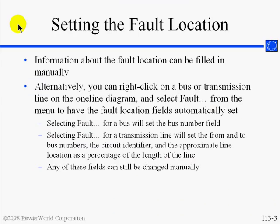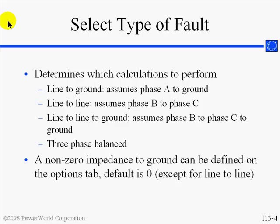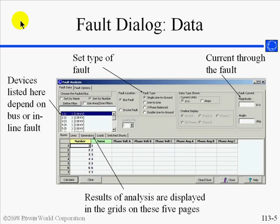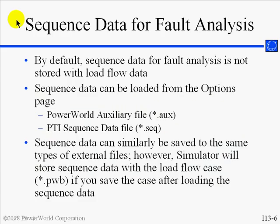The next few slides recap some of the features seen in the demonstration. Setting the fault location can be done manually through the dialog, or by right-clicking on a one-line diagram. This slide explains how to select the type of fault and what is assumed for the phases for the different fault types, and the impedance that you can set on the Options tab. The sequence data can be loaded from the PowerWorld auxiliary file format, as we did, or also from a PTI sequence data file.